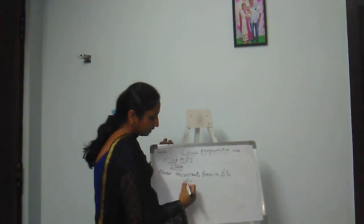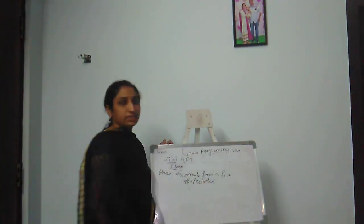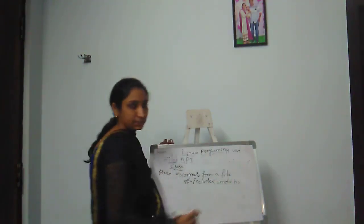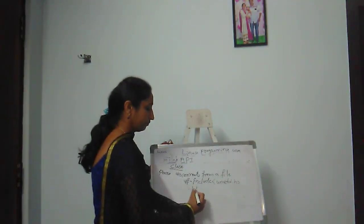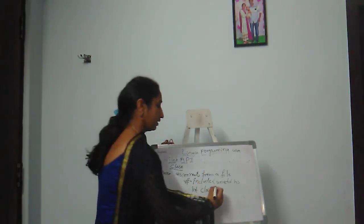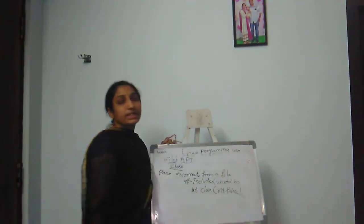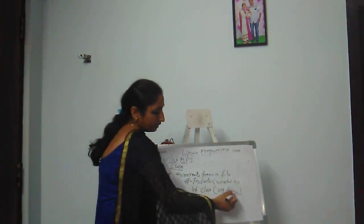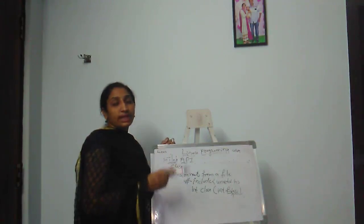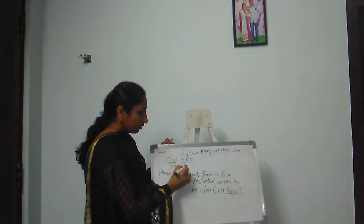For the close system call: hash include unistd.h. The syntax is: int close(int fd). The file descriptor value indicates which file we are going to close. This completes the close system call.